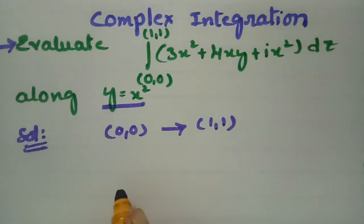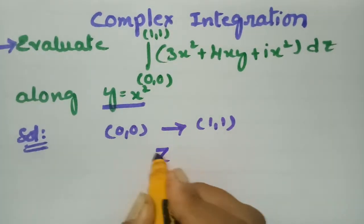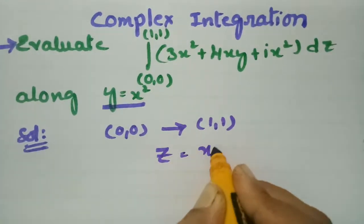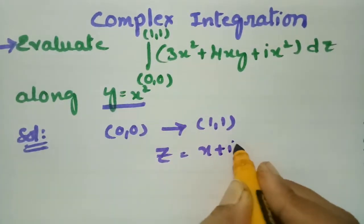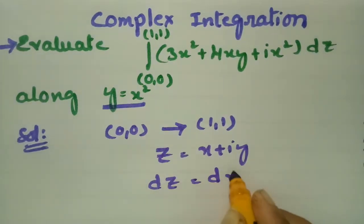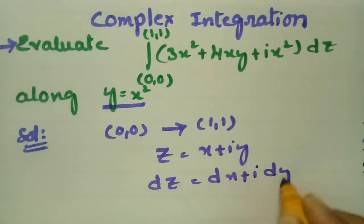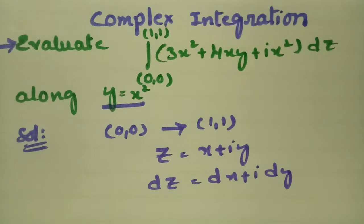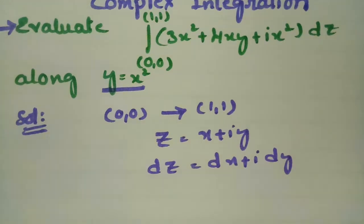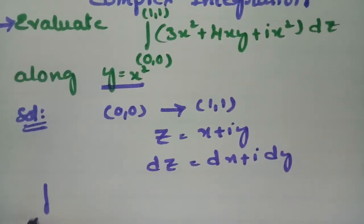The points are from (0,0) to (1,1). We have z = x + iy, so dz = dx + i·dy. Now I am going to use this to transform the integral.